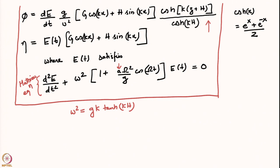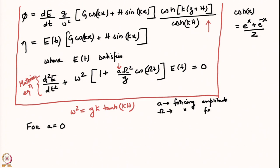Let us look at the application of this Mathieu equation to this particular problem. For zero forcing — A equal to 0 — where A was the forcing amplitude and omega was the forcing frequency, we should recover our previous results. We can see that this equation for E just becomes a simple harmonic oscillator equation for A equal to 0.